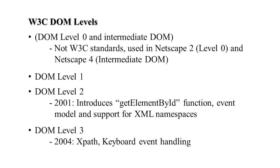There are different levels of W3C DOM. One is DOM level 0 and intermediate DOM — this is not a W3C standard, used in Netscape Navigator 2 and Netscape Navigator 4. Then DOM level 1 and DOM level 2, which introduced the getElementById function in 2001 and support for XML namespaces. Then DOM level 3, introduced in 2004, having features like XPath and keyboard event handling. We will discuss DOM levels in detail at the end of this video.